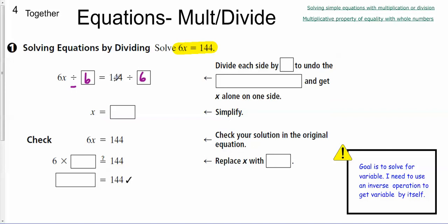So now here I've got to divide 144 divided by 6 because I already did 6 divided by 6 and I'm left with just x. So 144 divided by 6 is 20, carry the 2, we'll call it 24.